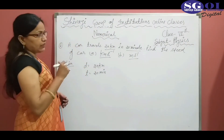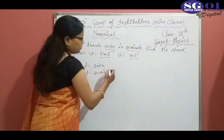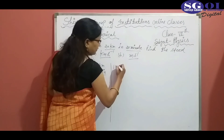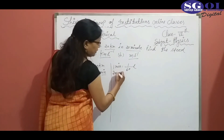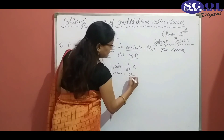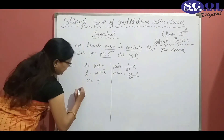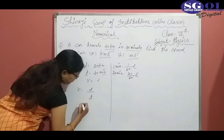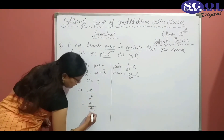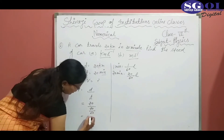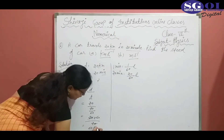And we have to find out speed in kilometer per hour. Firstly, we will convert minutes into hours. As we know that 1 minute equals 1/60 hour, and 20 minutes equals 20 divided by 60 hours. The formula: speed equals distance divided by time. Here, distance is 20 and time is 20 divided by 60. After solving, we get 60 kilometer per hour.